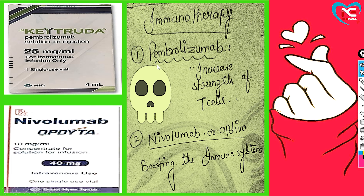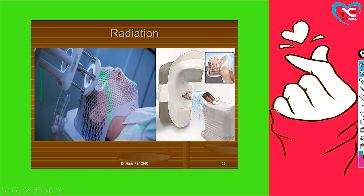Now immunotherapy drugs: pembrolizumab is a drug that increases T-cells — T-cells are part of your immune system (WBC types include B-cells and T-cells). Pembrolizumab helps strengthen T-cells. Next is nivolumab, which also helps boost the immune system.